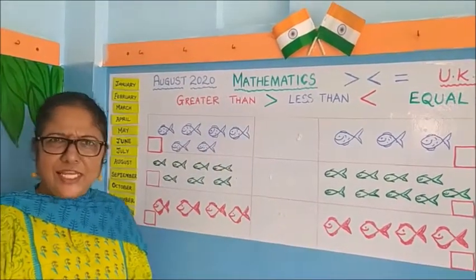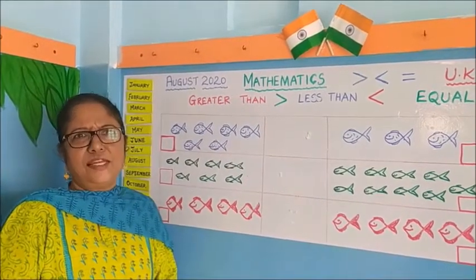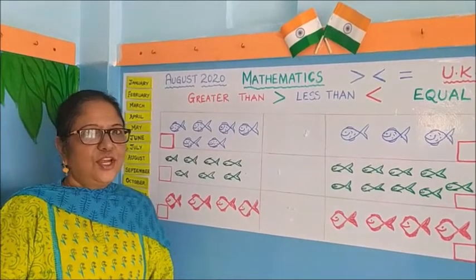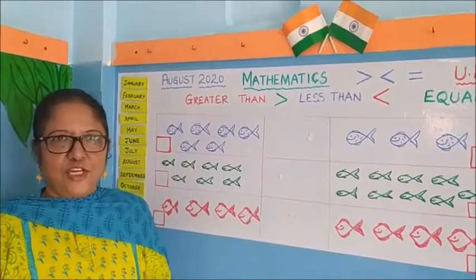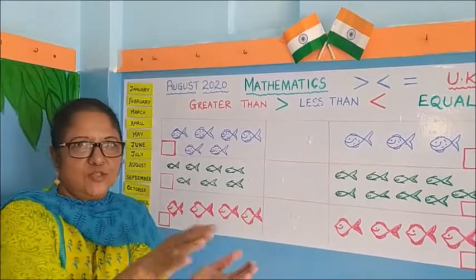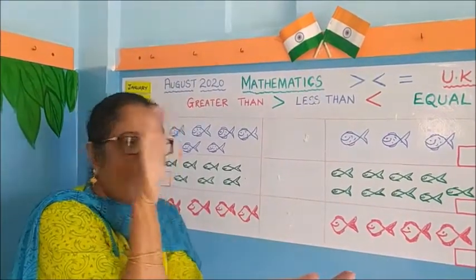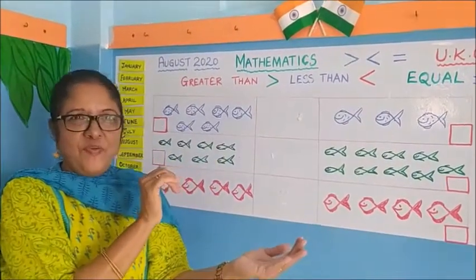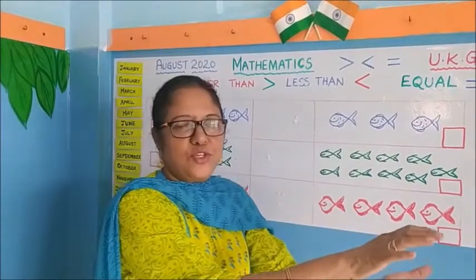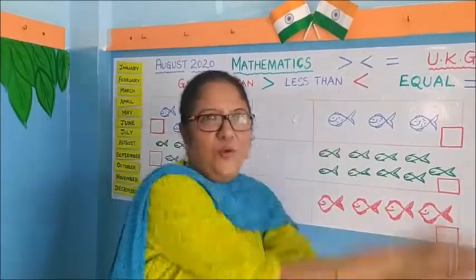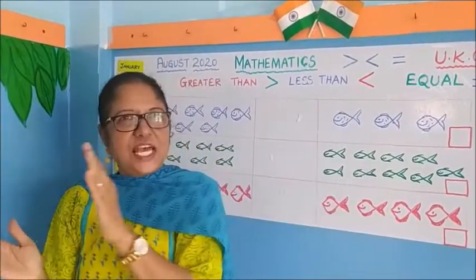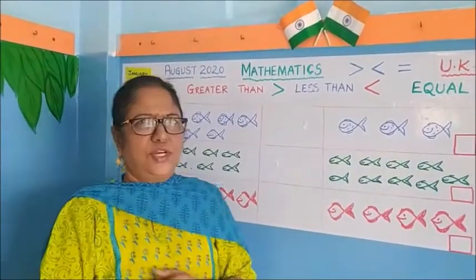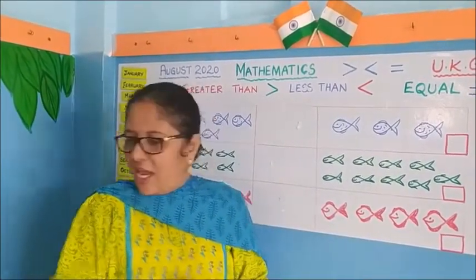Have you seen an alligator? What does an alligator do? It eats fishes. And when it sees more fish, it opens its mouth. Whichever side has more fishes, it will go and eat. And whichever side has less fishes, it does not eat.